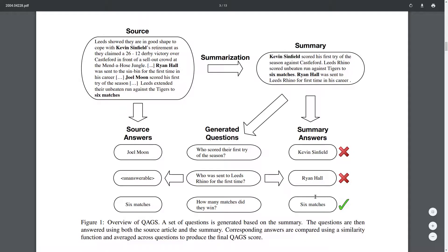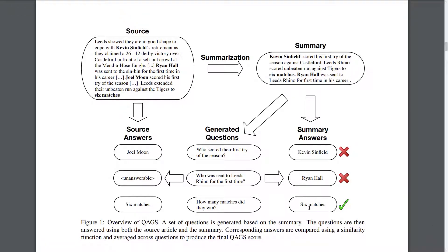For the last one there's a match. How many matches did they win? Both had six matches. Basically they count the average number of questions that are consistent and this gives you the QAGS score.